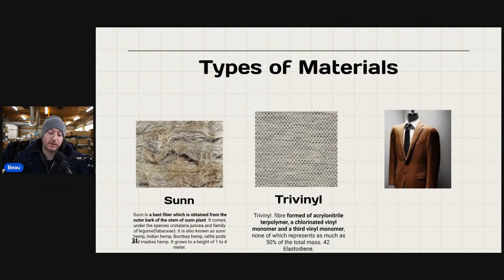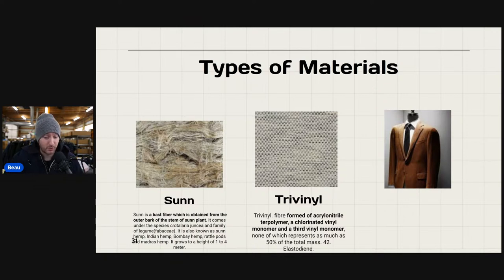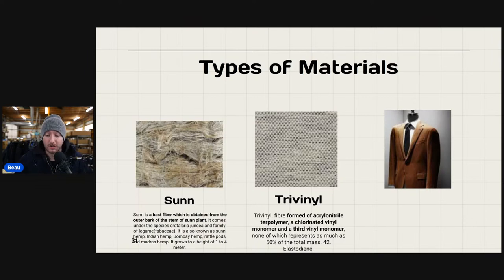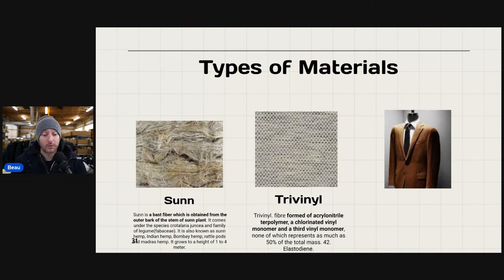Trivinyl is a fiber formed from acrylonitrile, a terpolymer, and chlorinated vinyl — trivinyl monomer and a third vinyl monomer, none of which represents as much as 50% of the total mass. Vinyl does appear out there occasionally. It has kind of a soft-shell feel — you'll see it in vinyl coats and raincoats. It's a water-repellent material.